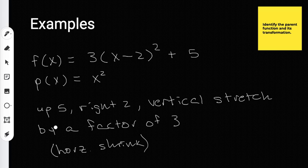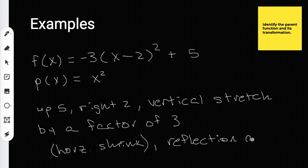That's an example of a dilation and a translation. But what if this was a negative 3? Then that would also give us a reflection about the x-axis. So all three types of transformations are used in this example. I hope that helps — that's function transformations.